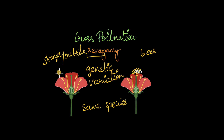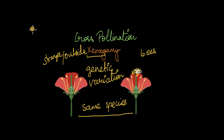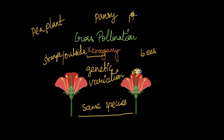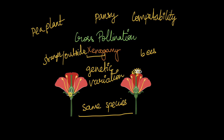Each flower produces a set of gametes that is genetically different from those produced by the other flower, so the offspring will have genetic variation even though the plants belong to the same species. Pollen compatibility is very important here — if the pollen grain of one plant, such as a pea plant, lands on the stigma of a different species like a pansy, the pollen grain will not germinate. This is another aspect of pollen-pistil interaction, ensuring that only compatible pollen grains germinate and send their male gametes to fuse with the female gamete.